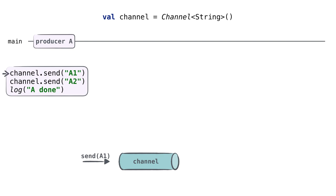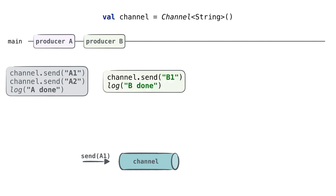In this case, no one yet called receive on this channel. Because of that, the coroutine that called the send call gets suspended. We'll use the gray color to mark that the coroutine is suspended. Because we run all our coroutines on the main thread, the second producer B coroutine is started only after the first one gets suspended and the thread is free. It's going to send only one value to the channel. But again, since this channel doesn't yet have a receive call that can receive this value, producer B also gets suspended.